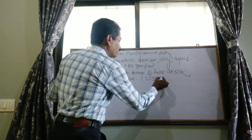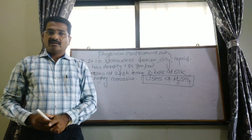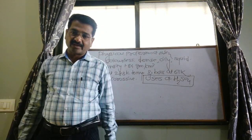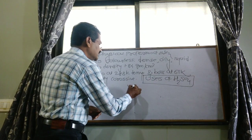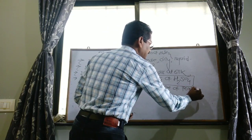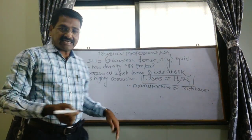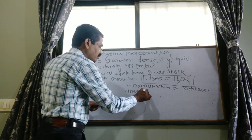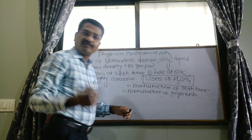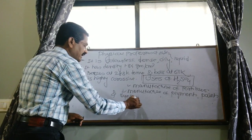Now see the uses of H2SO4 — uses of sulfuric acid. Sulfuric acid is the king of chemicals and is used for different purposes. First, it is used in the manufacture of fertilizers. Different fertilizers can be prepared using sulfuric acid. Second, it is used in the manufacture of pigments, paints, and dye stuff.